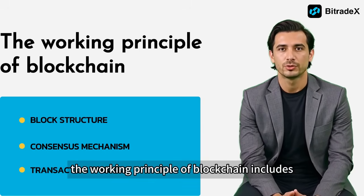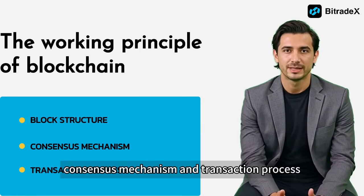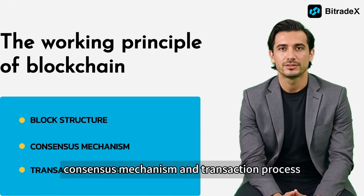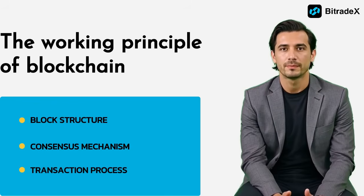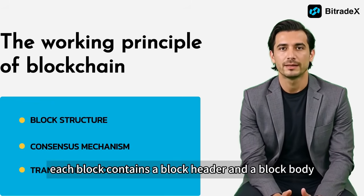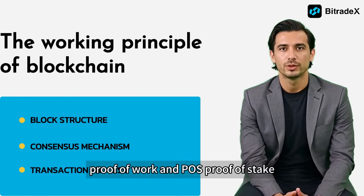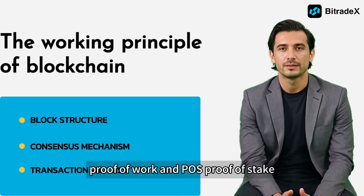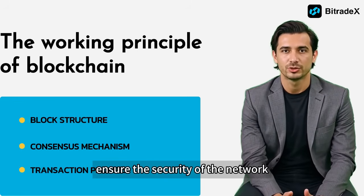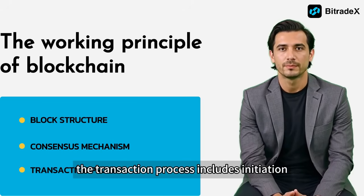The working principle of blockchain includes block structure, consensus mechanism, and transaction process. Each block contains a block header and a block body. Consensus mechanisms such as PoW (Proof of Work) and PoS (Proof of Stake) ensure the security of the network.